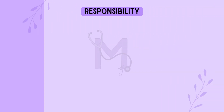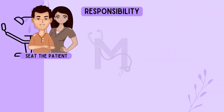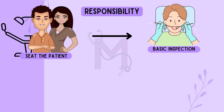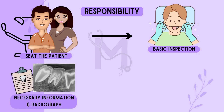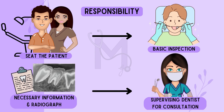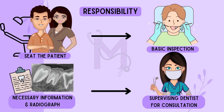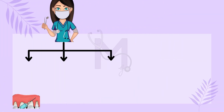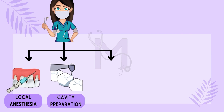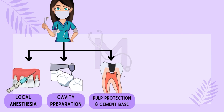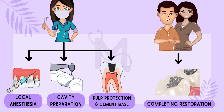It is the responsibility of an EFDA to initially seat a patient, followed by carrying out a basic inspection of their dental health. After having gathered the necessary information and radiographs, they should then call their supervising dentist for consultation. The dentist then performs the main steps, such as giving local anesthesia, preparing cavities, and placing pulp protecting agents and cement bases, after which the assistant helps in completing the restoration.